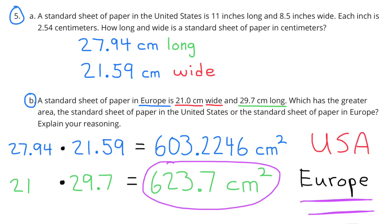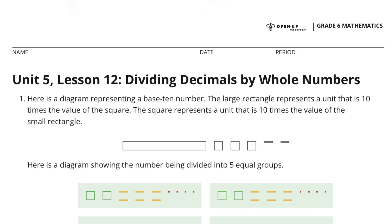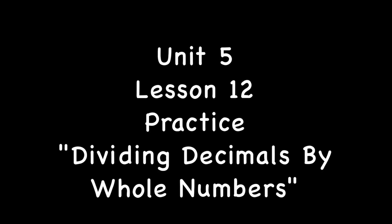Part B: A standard sheet of paper in Europe is 21 centimeters wide and 29 and 7 tenths centimeters long. Which has the greater area — the US or the European standard sheet of paper? The area is length times width. In the United States the total area is 603 and 2,246 ten-thousandths centimeters squared, and in Europe the area would be 623 and 7 tenths centimeters squared. So the European standard sheet of paper has more area than the American standard sheet of paper. Congratulations! You have completed Unit 5 Lesson 12, Dividing Decimals by Whole Numbers.